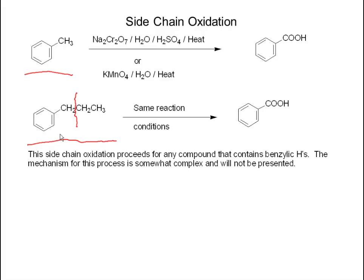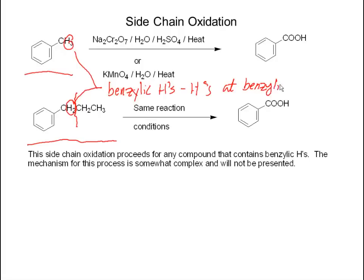The only requirement is that you have benzylic hydrogens. These are hydrogens at the benzylic position. The side chain oxidation proceeds for any compound that contains benzylic hydrogens. The mechanism for this process is complex and we're not going to present it — frankly, it's not that well-known anyway.